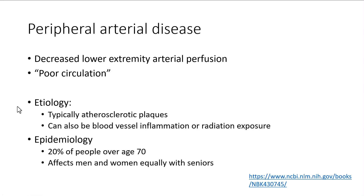Peripheral artery disease is probably one of the most common things that is underdiagnosed in the general population until it gets worse. What we have here is not enough blood getting to the limbs — so this is 'poor circulation.' We have these plaques, and we've talked about them in the context of the heart. When they happen in the limbs, the limbs experience low blood flow issues, with a slightly different manifestation.